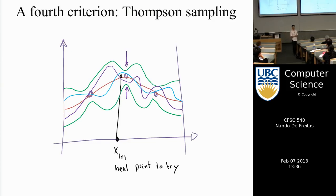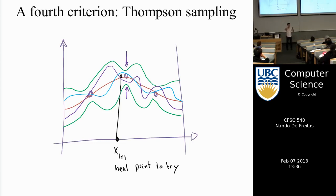A student asks: why not just pick the next point as the one with highest uncertainty? Because then you'd just be learning — wasting effort learning the whole function. Your objective is to find the location of the maximum or minimum; you don't need to know the entire function. Sampling always at highest variance would mean pure exploration, but my objective is to minimize exploration steps and just find the place that gives the most oil.